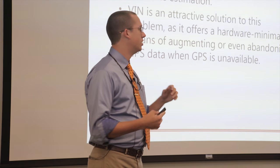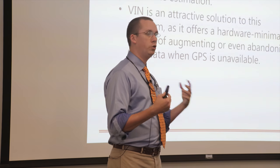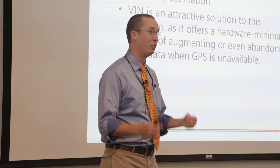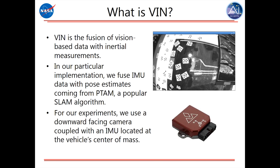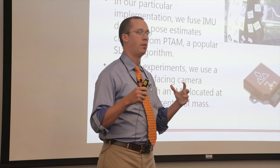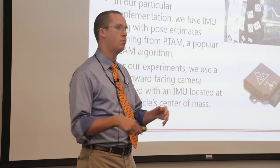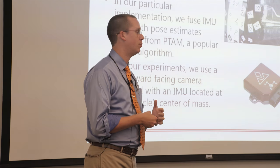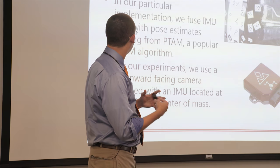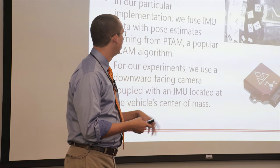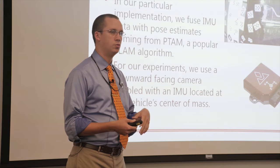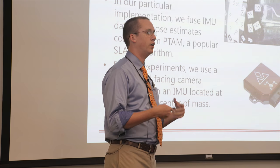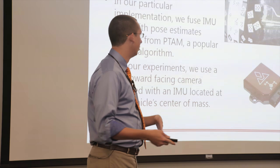What is VIN? It's a fusion of vision-based data with inertial measurements. In our particular implementation, we've been using what's called PTAM, Parallel Tracking and Mapping, which is a fairly popular member of a very large body of algorithms called SLAM. That stands for Simultaneous Localization and Mapping. We've been using PTAM on a downward facing camera and we've been using an IMU that's been placed at the center of mass, and we've been fusing the inertial measurements, those being linear accelerations and angular velocities, with the pose estimates that come out of the SLAM algorithm.